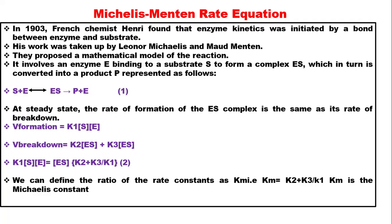The model involves an enzyme (E) binding to a substrate (S) to form an enzyme-substrate complex, which in turn is converted to a product (P). So you have: enzyme plus substrate reversibly giving enzyme-substrate complex, which then gives product and free enzyme. Remember, one of the properties of enzymes is that they are unchanged at the end of the reaction.